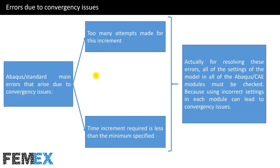Abaqus standard solver has two main errors that arise due to convergency issues: 'too many attempts made for this increment' and 'time increment required is less than the minimum specified.' To resolve these errors, all settings of the model across all Abaqus CAE modules must be checked, because incorrect settings in any module can lead to convergency issues.